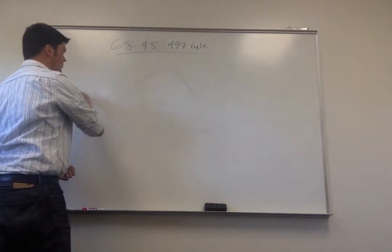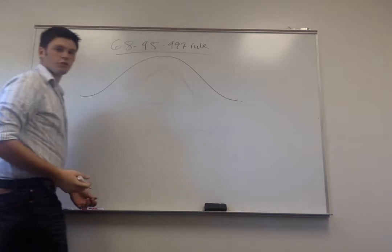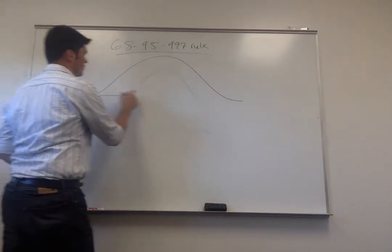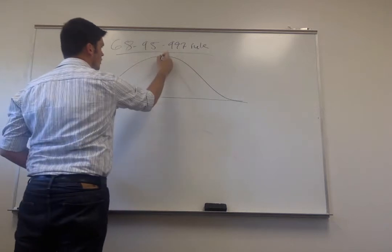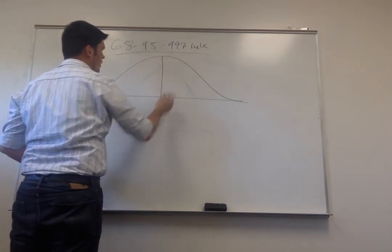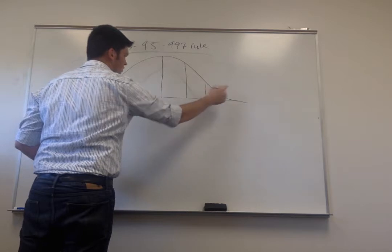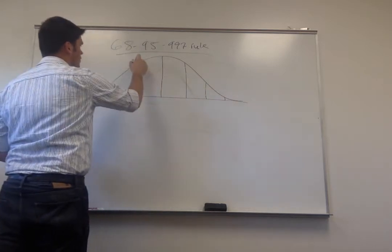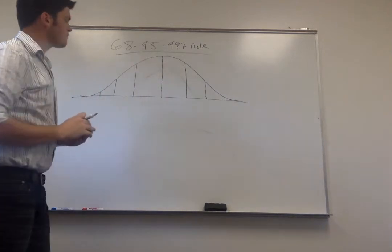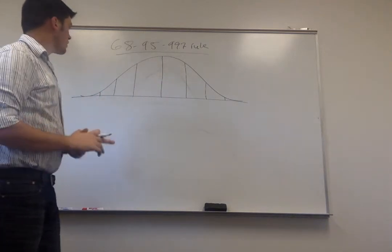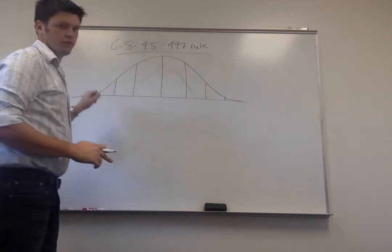With normally distributed data, we have our normal distribution curve. In a normal distribution curve, our mean is right in the middle, and on each side we have three standard deviations: one, two, three. So here's our mean, and then three standard deviations away from the mean on both sides.